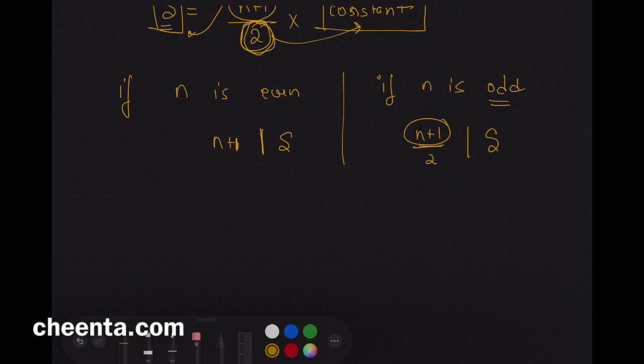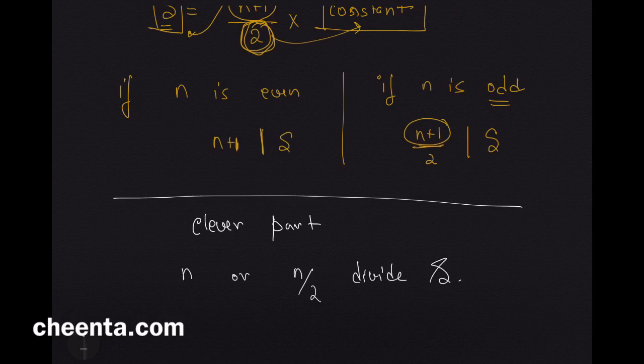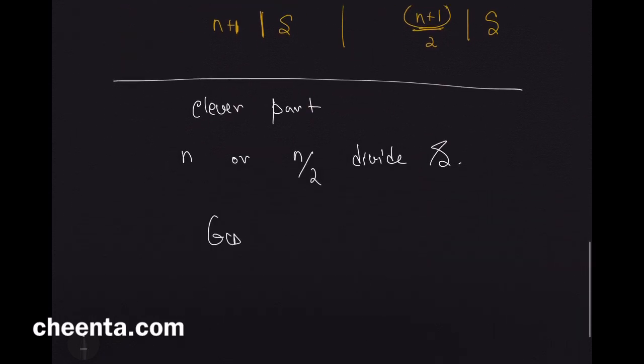The next thing we want to show, and that's the clever part, check the link in the description, that n or n by 2 will divide S, depending on whether n is even or odd. And then, you have to use the fact that the GCD of n and n plus 1 is always 1 to complete the solution.